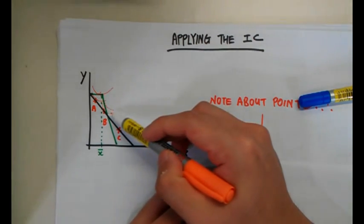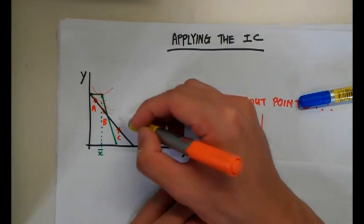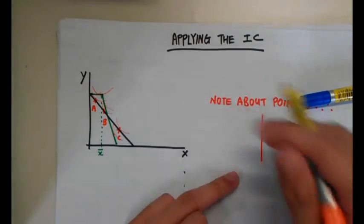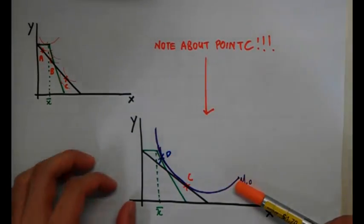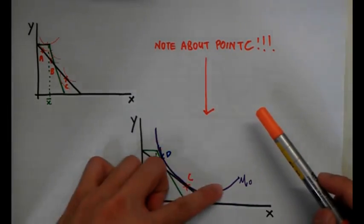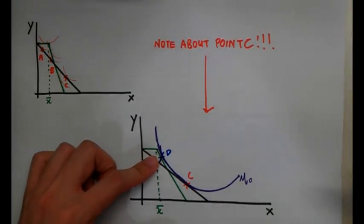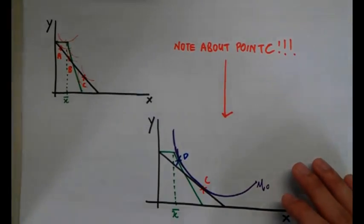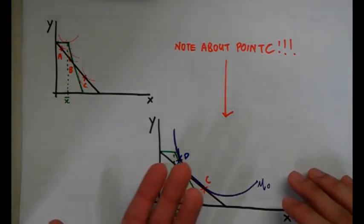At point A, the individual can reach a higher indifference curve, so they are better off. At point B, depending on the shape of their indifference curves, they may also be better off. At point C, they would originally be on a higher indifference curve, and the new constraint forces them to a lower one — so they are worse off. However, if the new budget constraint is tangent to the original indifference curve at point D, the individual is neither better nor worse off; they are equally satisfied.